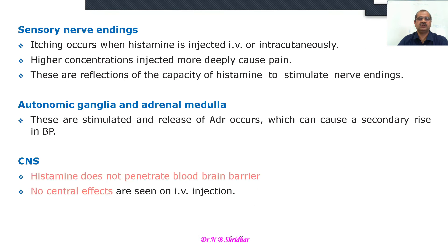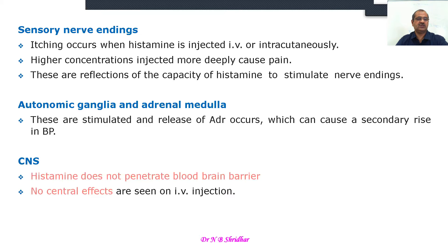Whenever there is allergy there is itching and pruritus due to sensory nerve effects. Itching occurs whenever histamine is injected IV or intracutaneously; it is locally active, and higher concentration injected more deeply can cause pain. These are reflections of histamine's capacity to stimulate nerve endings. It is thought to be due to H3 and H4 type receptors.